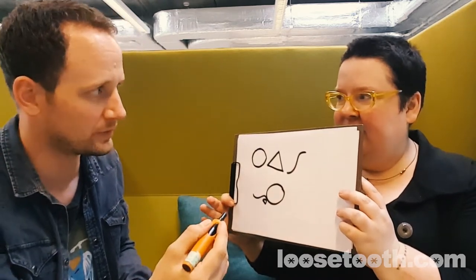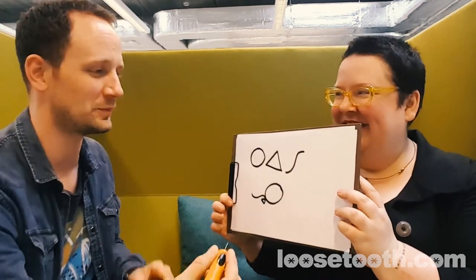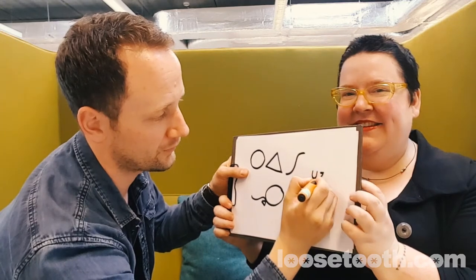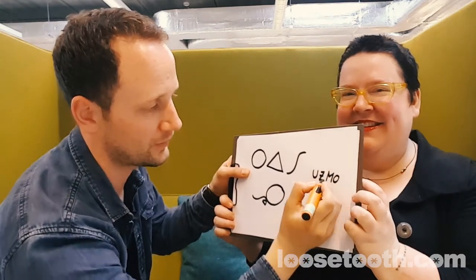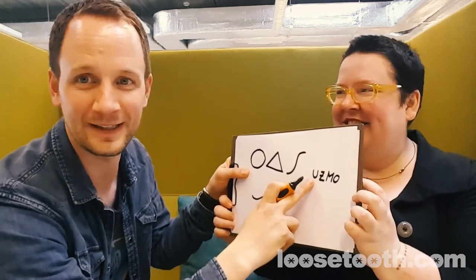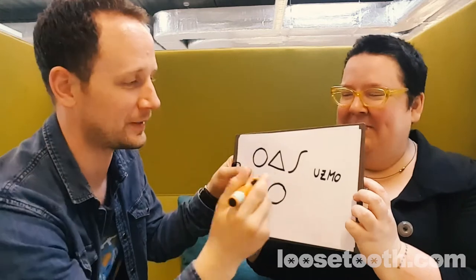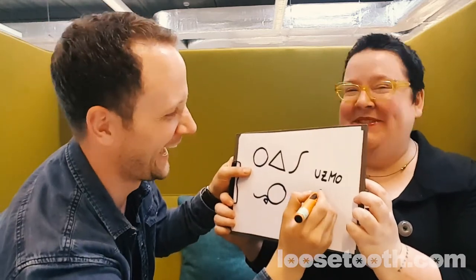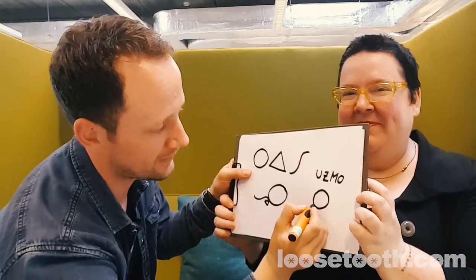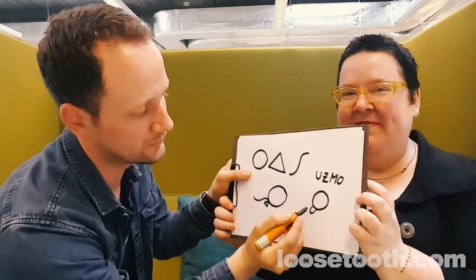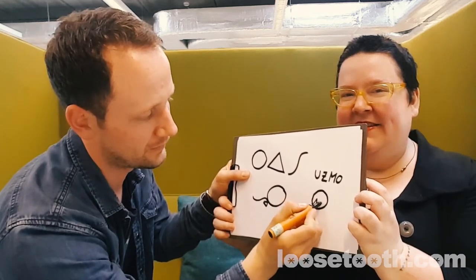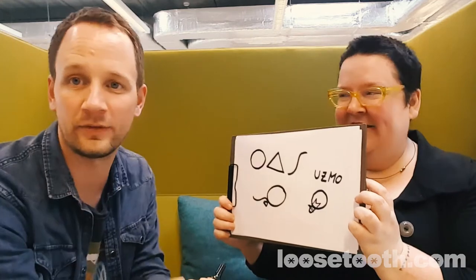Some of you might know the UTSMO light bulb. I will use the letters U, Z, M, and O to draw a light bulb. So there's the O, then the U, and then the Z and the M — and I have the light bulb.